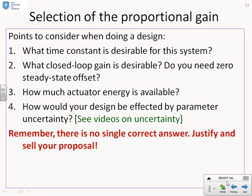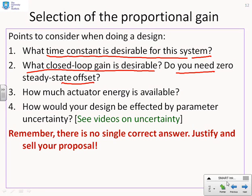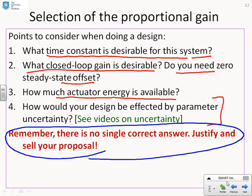Things you might want to think about when doing a design. What time constant is desirable for this system? What closed-loop gain is desirable? Do you need zero steady-state offset, which none of these have given? How much actuator energy is available? Because we've shown that u(0) is linked to this proportional compensation K. How would your design be affected by parameter uncertainty? That's covered in other videos. But we note here, there is no single correct answer. The purpose of this video is to give you some insight, so you can see how the time constant and steady-state gain depend on your choices, so you have the tools to make the choice you want.